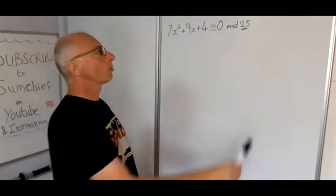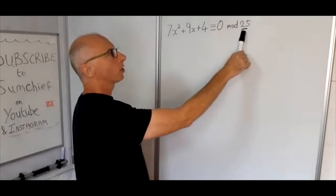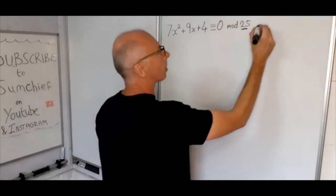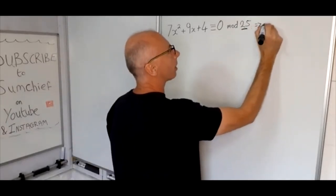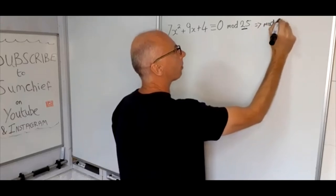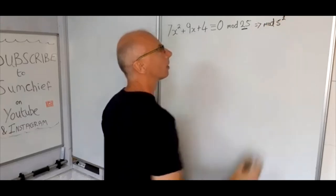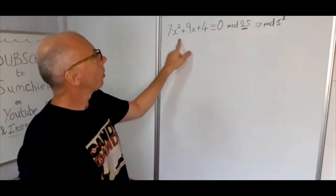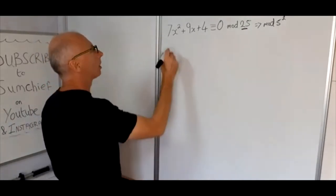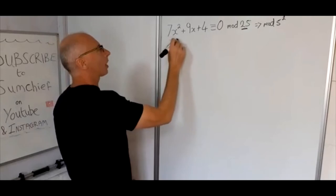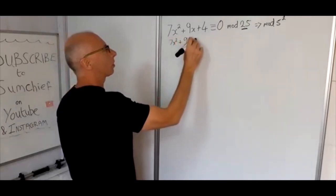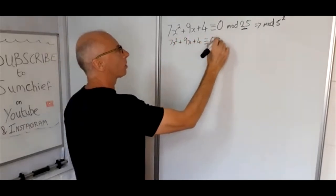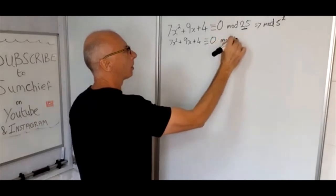We could use the rule where this is modulo 5 squared. So what we do know is that this is mod 5 squared. So now what we'll do is we'll break this up now and solve this for mod 5.